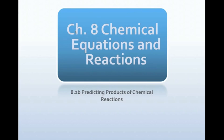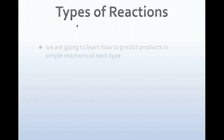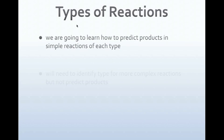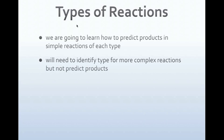We're going to start talking about predicting the products of chemical reactions. We've talked about how to write reactions and how to balance reactions — now we're going to talk about predicting the products. We're going to learn to predict the products in very simple reactions, looking at each of the five basic types. For more complex reactions, we'll just need to identify the types, not predict the products.